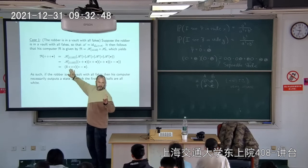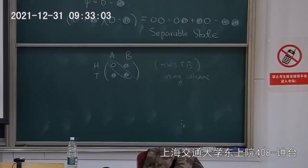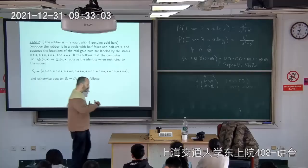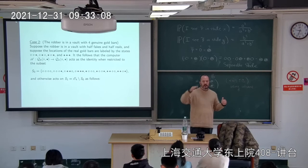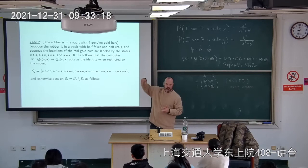In the second case, when the robber is in a vault with four real and four fake gold bars, Archimedes acts differently: for fake gold bars it does nothing, and for real gold bars it changes the fourth input. Suppose the locations of the real gold bars are labeled white-white-black...